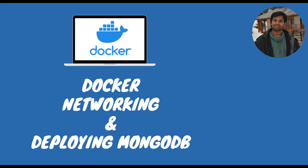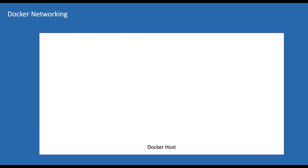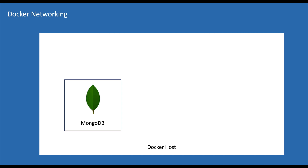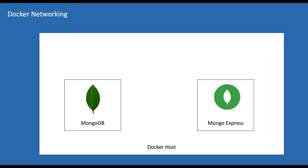Hey guys, welcome back to the Docker series. If you watched my previous video of this series, I'm sure that now we have good knowledge of using basic Docker commands. In this video, we will try to understand what are the different types of Docker networks available and how to run applications in these networks. For demonstration, we will be deploying MongoDB and Mongo Express and see how to establish a connection between these two.